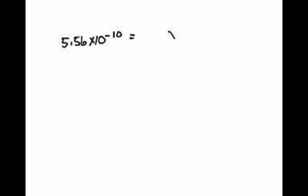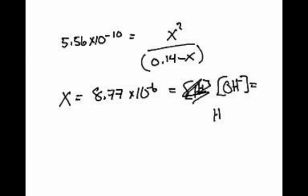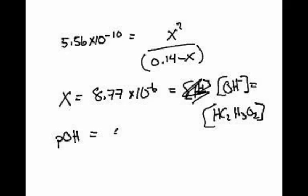Plug it into your solver. And it's going to be 8.77 times 10 to the negative 6. This is equal to the concentration of hydroxide, and also the acetic acid. The question asks for pH, so I'll find the pOH first. Take the negative log of 8.77 times 10 to the minus 6 — that gives 5.06. Therefore pH is 14 minus 5.06, which is 8.94. So that's the answer.